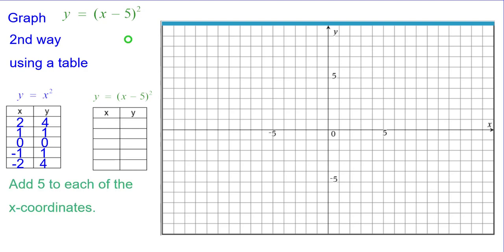We're going to add 5 to each of the x-coordinates because of that minus 5. And it goes backwards when we have the quantity of x minus 5 inside the function.